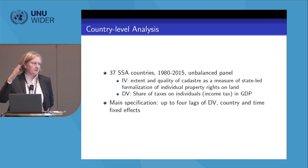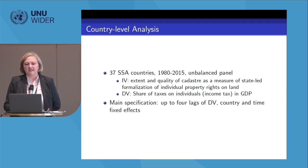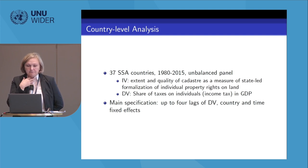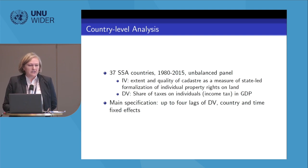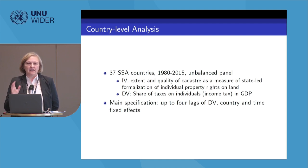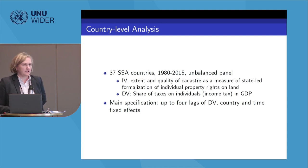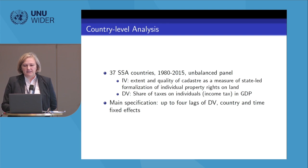To show the association between state-assigned property rights and taxation, we use our own dataset measuring the extent and quality of cadastro as a measure of state land formalization of individual property rights. Our dependent variable is the share of individual tax revenue as a share of GDP — i.e., income tax. You might ask why it is not land tax, and I can answer this in Q&A, but the variation in land and property tax collection in these countries is so low that we couldn't run the test meaningfully.